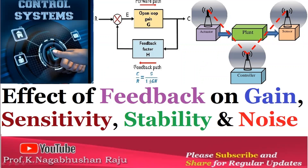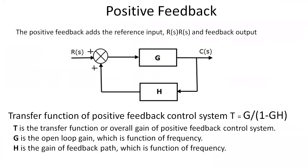So we have an input signal given to the error detector — a summing point — where the transfer function of a positive feedback control system is G / (1 − GH). G is the gain of the forward functional element. H is the gain of the feedback path element, which is correcting the factor and giving it back to the error detector. T is the overall transfer function of the positive feedback control system. G is the open-loop gain, a function of frequency, and H is the gain of the feedback path, also a function of frequency.